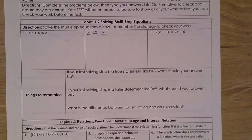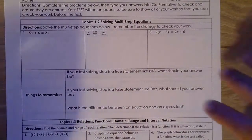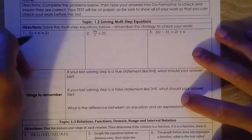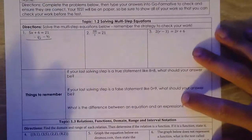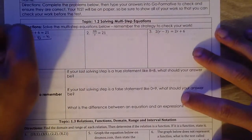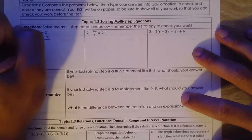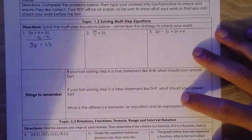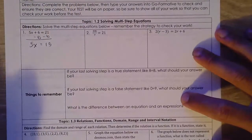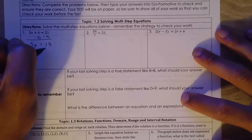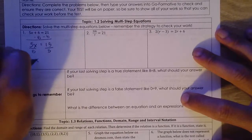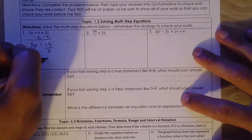Problem number one: 5x plus 6 is equal to 21. We go ahead and subtract 6 from both sides. That cancels out our 6s. We're left with 5x is equal to 15. Dividing both sides by 5, we get x is equal to 3.